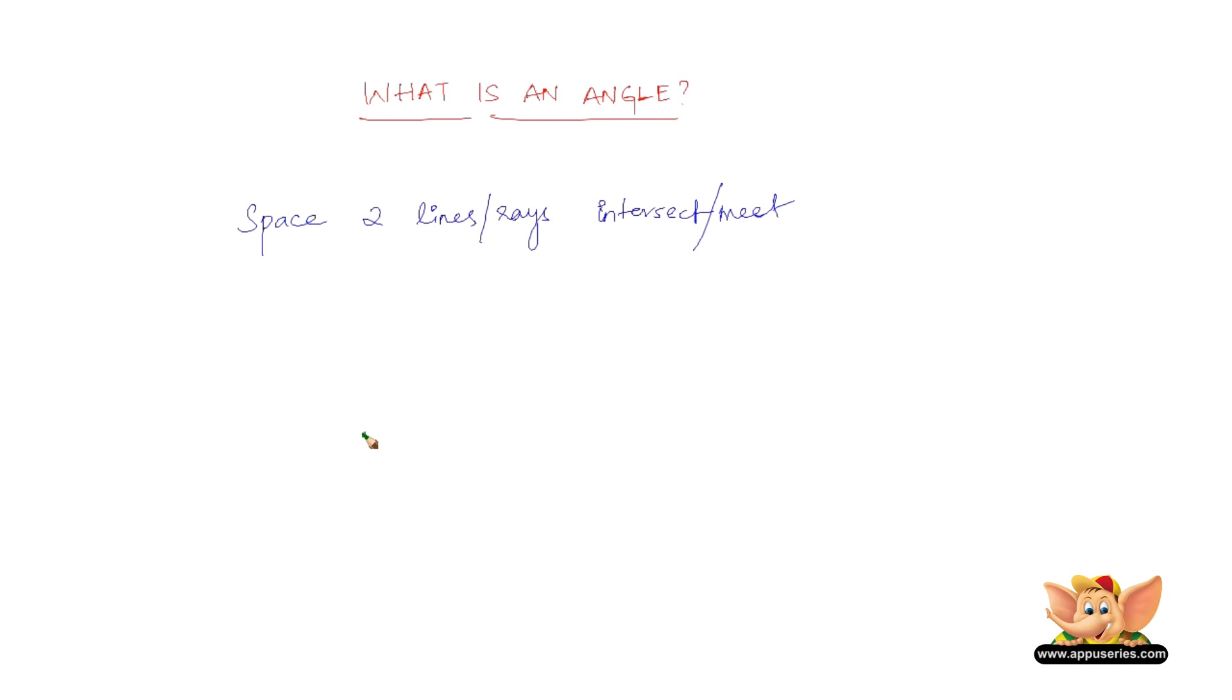Say for example, we have a point here from which two rays come out. There is some space between these two rays.